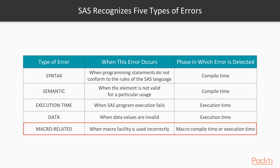So these are the five basic types of errors in SAS: syntax error, semantic error, execution time error, data error, and macro-related error. Logic errors also occur during execution time, which we will see in detail in further videos, along with how to identify errors in the SAS log window and how to correct them.